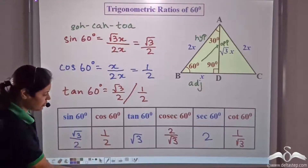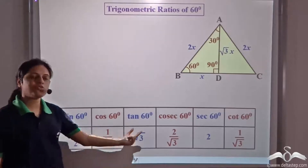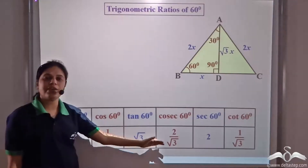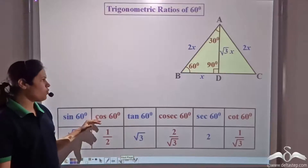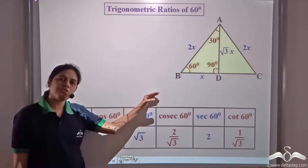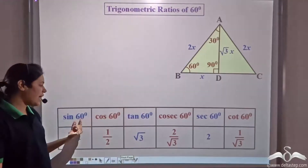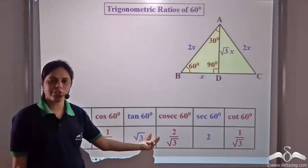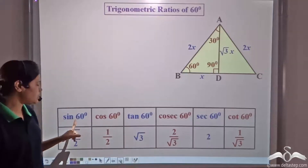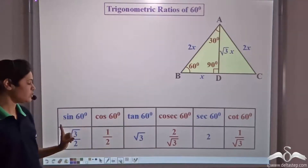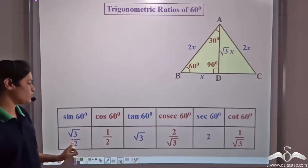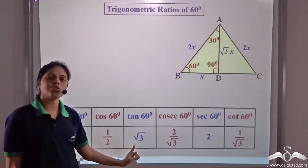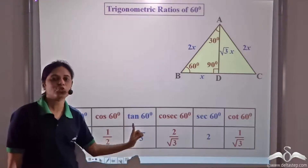These are the trigonometrical ratios corresponding to 60 degree, and you need to remember their values. No matter what the length of the sides of the triangle, when the angle is 60 degree, sin 60 is always √3/2, cos 60 is always 1/2, and tan 60 is always √3.